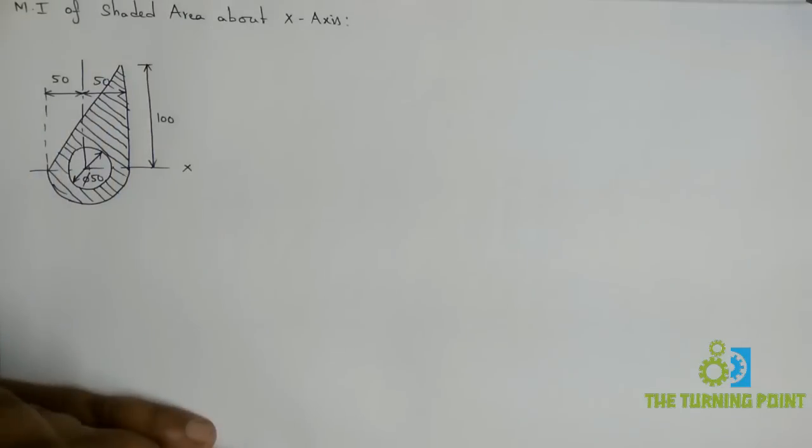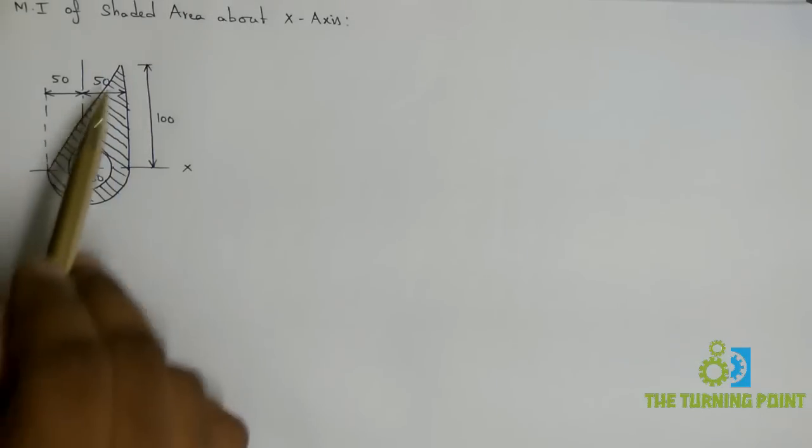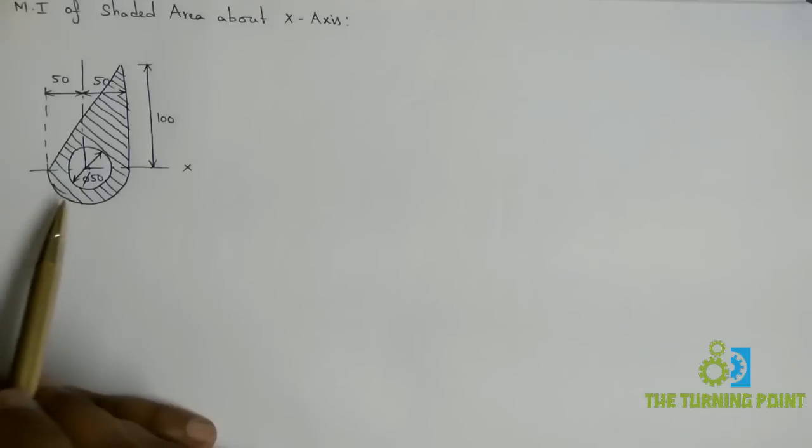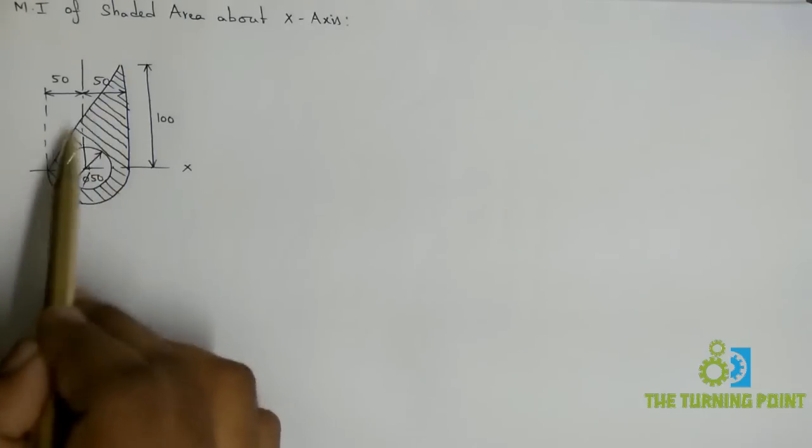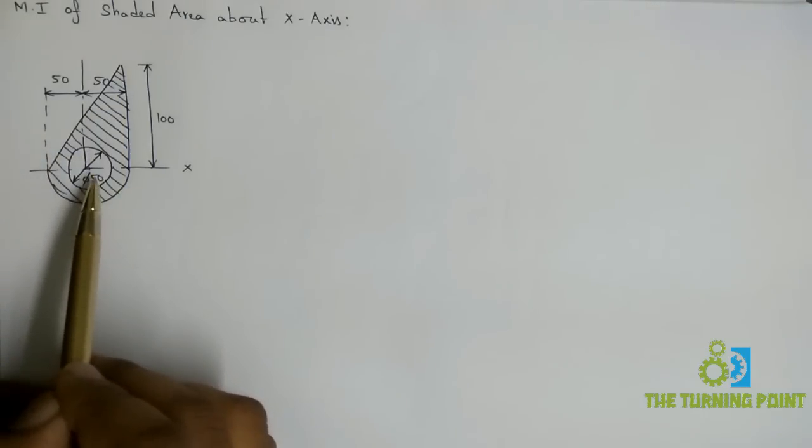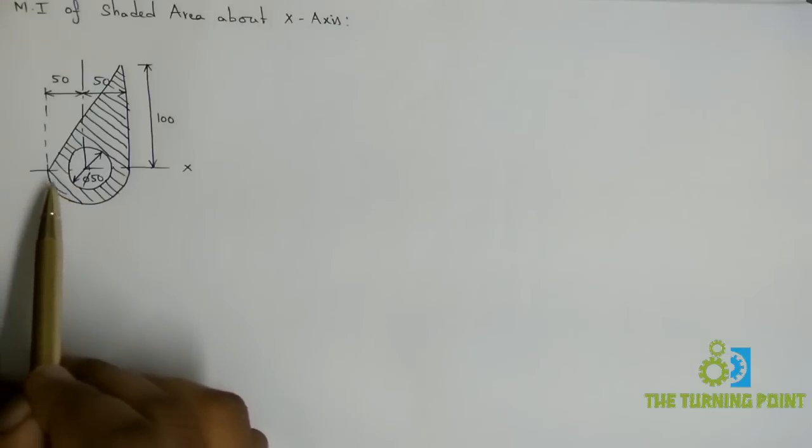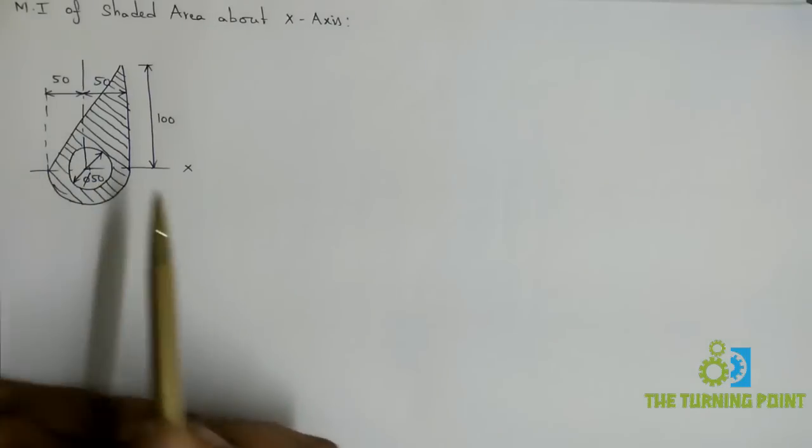The first thing you need to observe is the basic geometries involved in this composite figure. This is a combination of a right-angle triangle, a semi-circle, and a complete circle. To have this shaded area, we need to subtract the circle from the semi-circle and right-angle triangle.